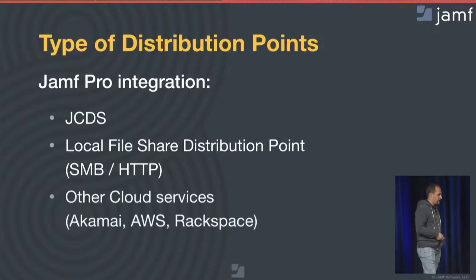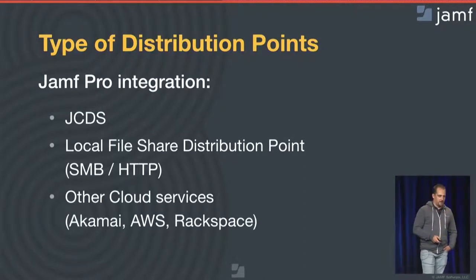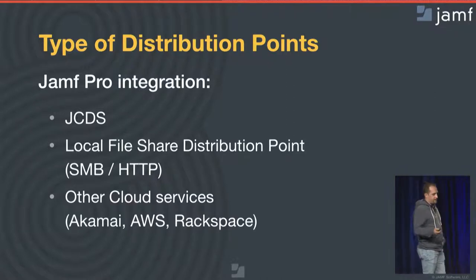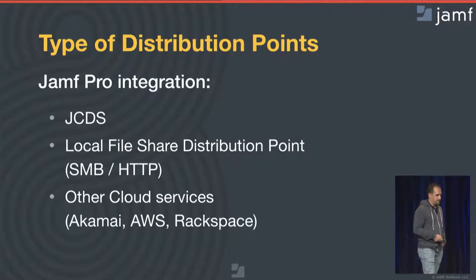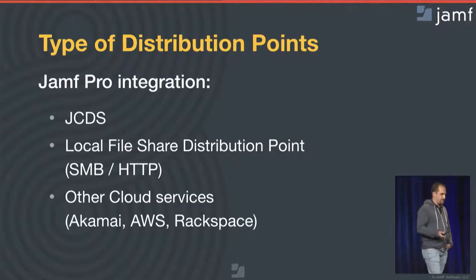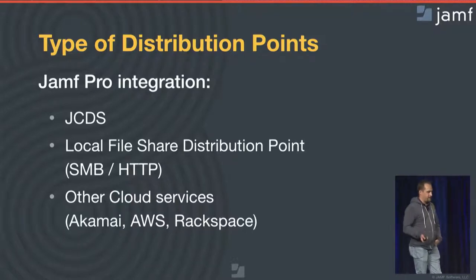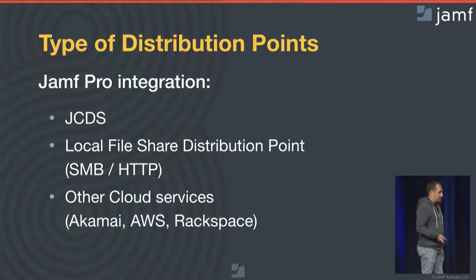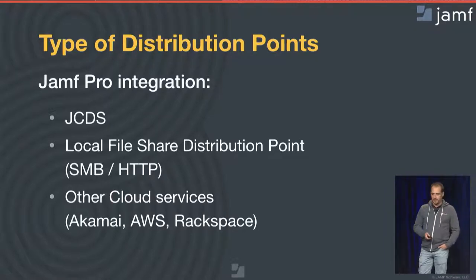Before we make a decision on what type of distribution point you will be using, let's see what is actually compatible with Jamf Pro. For those using Jamf Cloud, as part of the subscription with Jamf, you have access to the JCDS or the Jamf Cloud Distribution Server, which basically gives you unlimited storage for all the content you might want to deploy. For those not using Jamf Cloud but still wanting a cloud service, you can integrate with AWS and Rackspace. But we can also choose a local file share distribution point over SMB or HTTP.